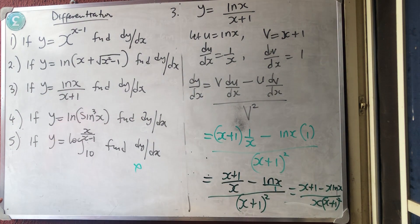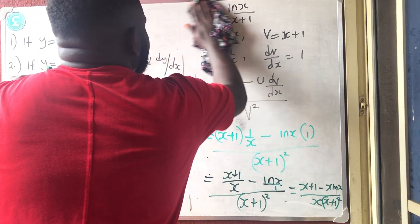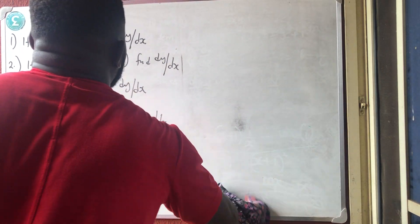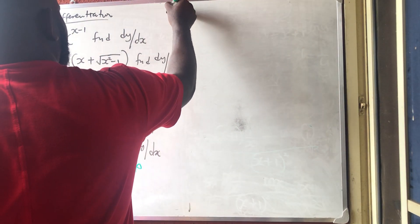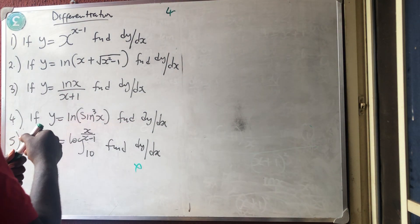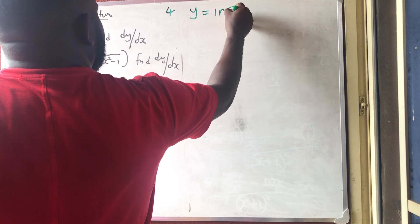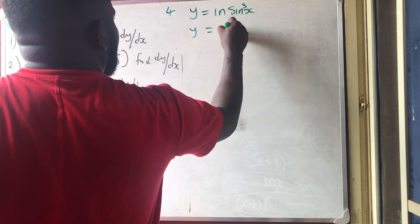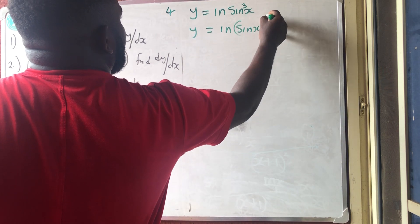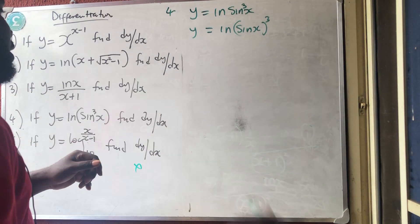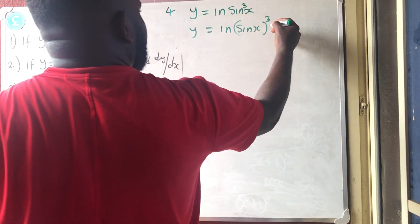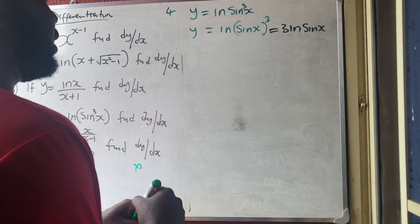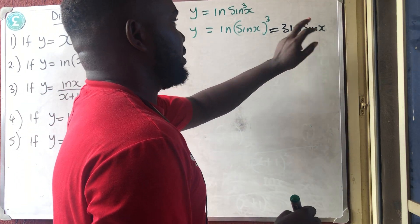That is the result for number 3. Now number 4: y equals ln(sin³x). This is exactly the same as y equals ln(sin x) all cubed. Using the log power rule, the power moves to the front, giving y equals 3·ln(sin x). This is still a chain rule.